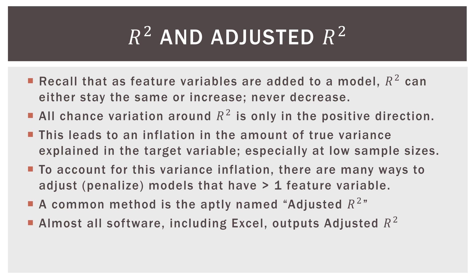To account for this variance inflation, there are many ways to adjust or penalize models that have more than one feature variable. A common method is the aptly named adjusted R-square. Almost all software, including Excel in the data analysis tool pack, outputs adjusted R-square.